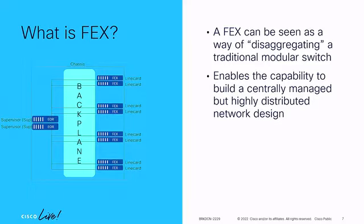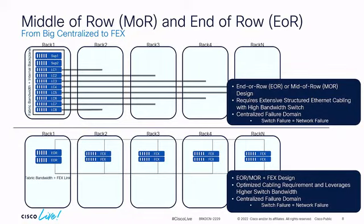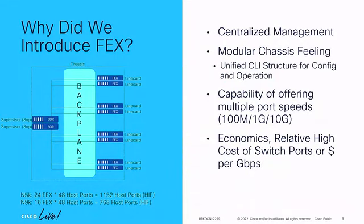Representationally, it's a backplane — we're connecting end-of-row switches with FEX as distributed line cards. We modified the end-of-row or middle-of-row design to a FEX-type deployment, lessening the burden on structured cabling because now devices are in individual racks with much smaller, condensed cable runs. However, we still had a single failure domain — if those end-of-row or middle-of-row switches go down, all connectivity is lost.